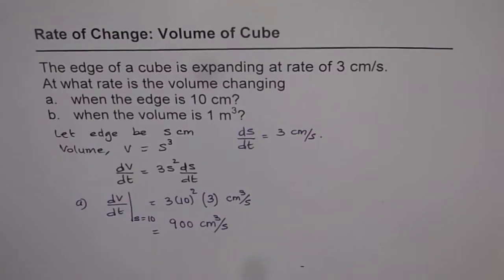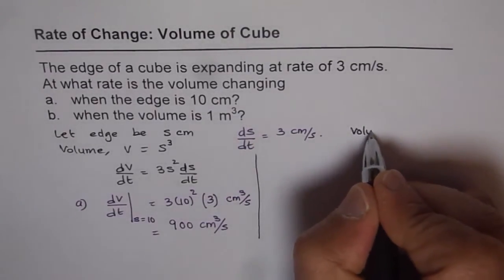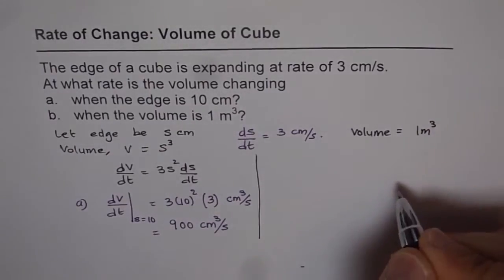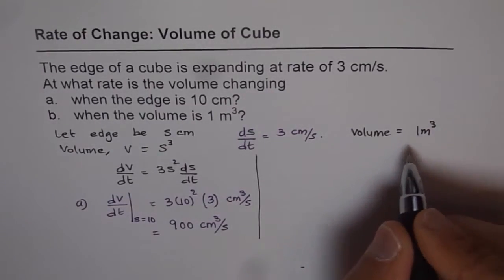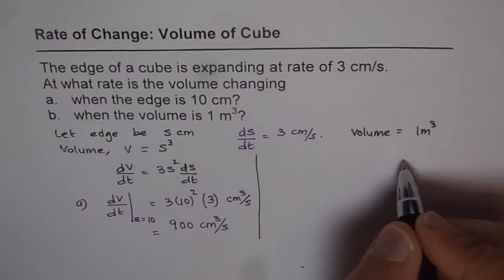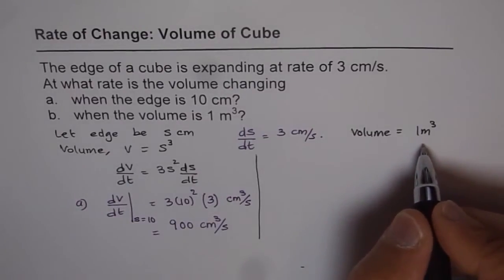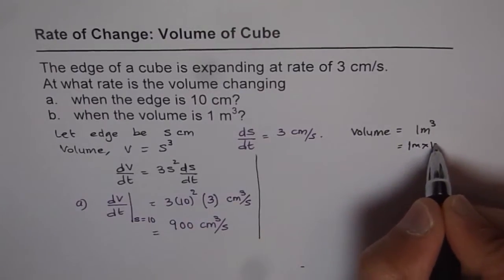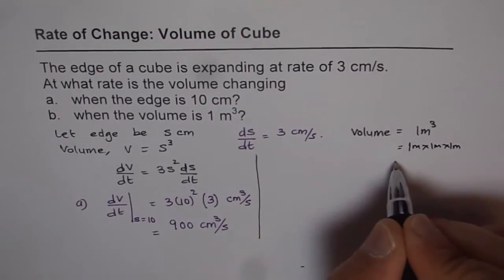Now for part b, it says when the volume is 1 meter cube. So what do you understand by volume equals 1 meter cube? We have to find what is the edge when the volume is 1 meter cube. So I find this is kind of tricky. 1 meter cube means 1 meter times 1 meter times 1 meter. Why am I doing this? I think it is important to do.